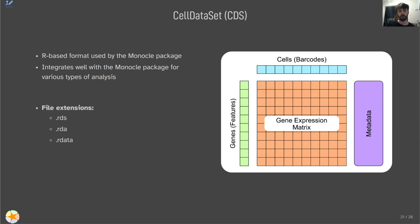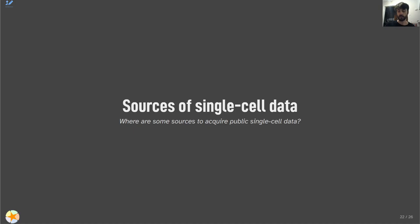Our last format is the CellDataSet format. This is also an R-based format used by the Monocle package, and it integrates easily with the Monocle suite of tools, which performs all different types of single cell analysis similar to Seurat and Bioconductor. The file extensions are again the same: .rds, .rda, and .rdata. That covers all the different common formats for storing single cell data.